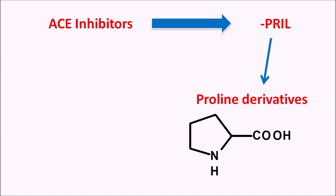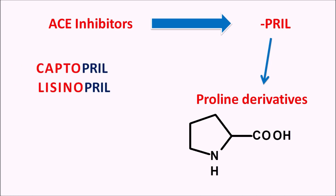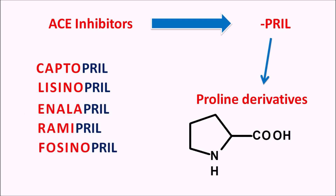For instance, captopril and lisinopril are active drugs. Other ACE inhibitors are prodrugs — they need bioactivation, and only once converted into their active metabolite can they inhibit enzyme activity. Examples of prodrugs include enalapril, ramipril, fosinopril, and trandolapril.